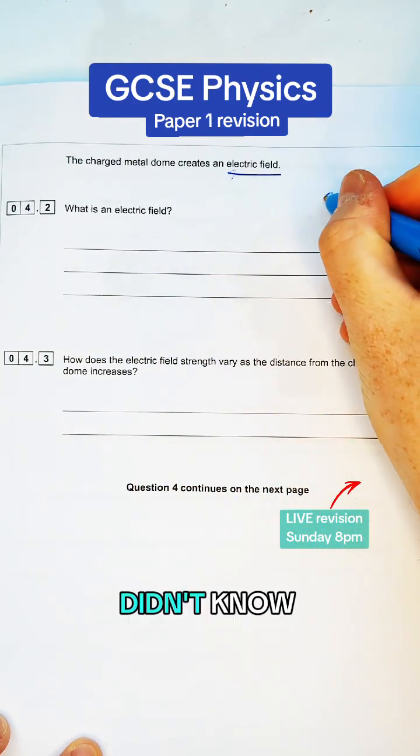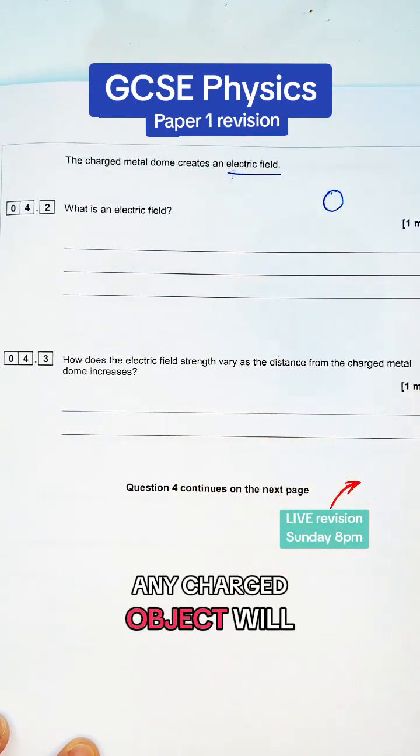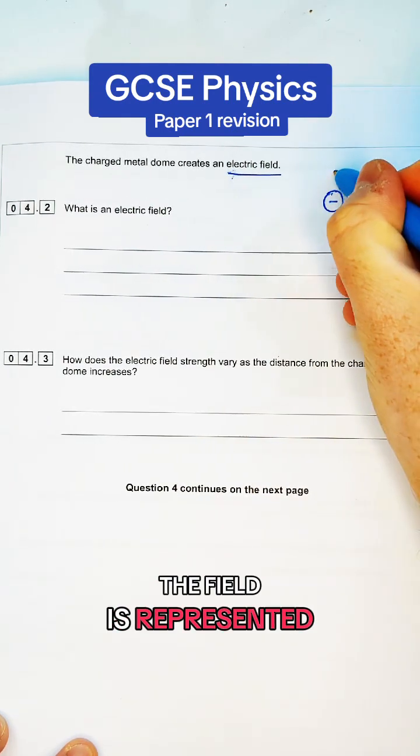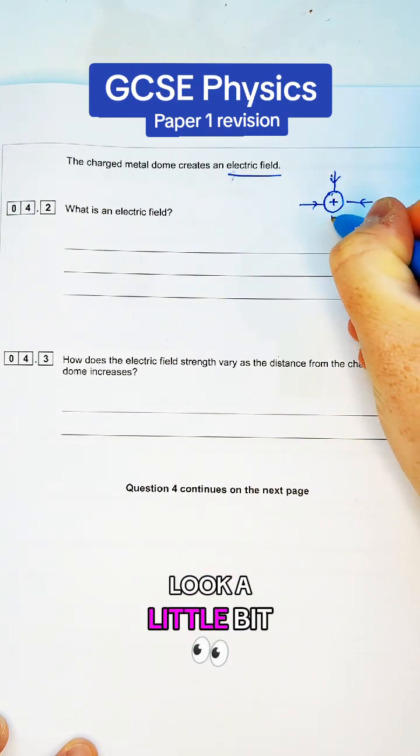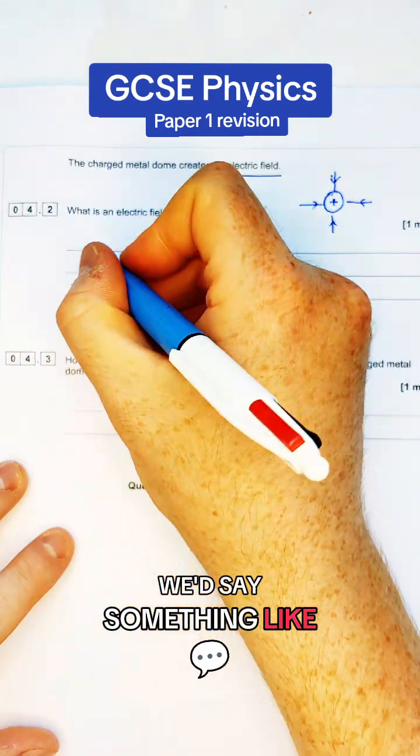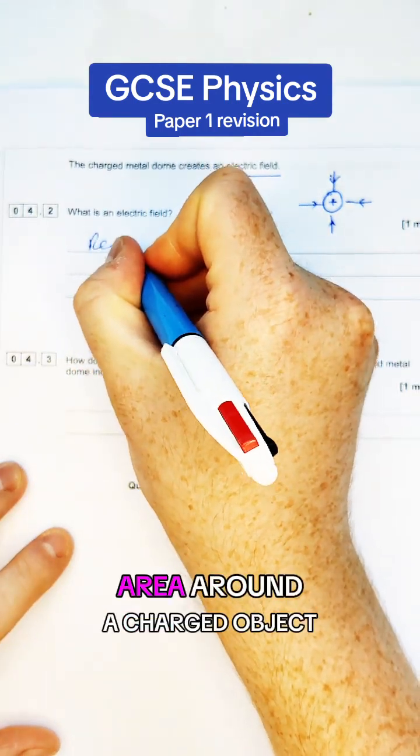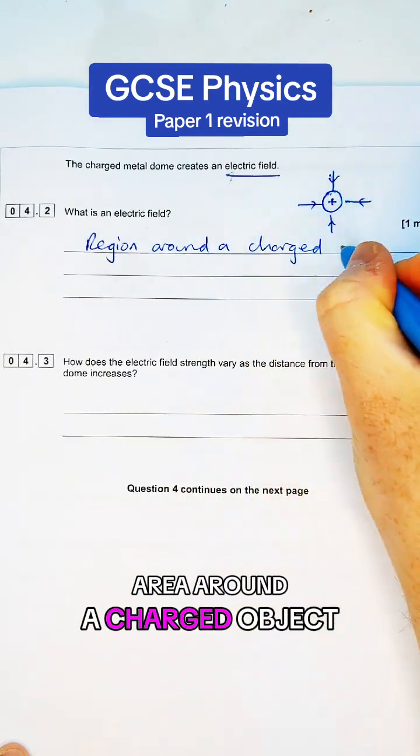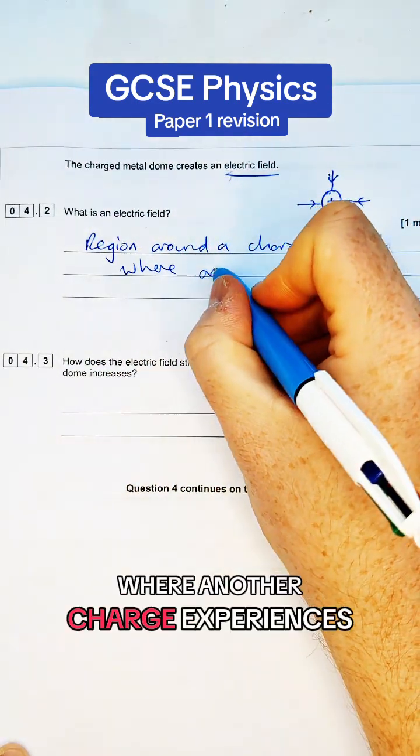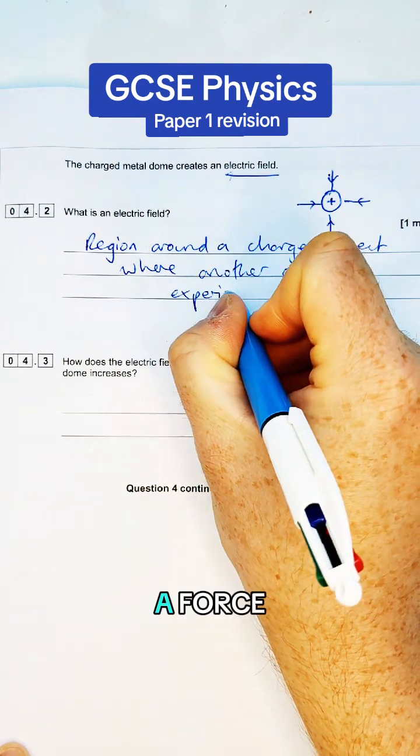Electric fields - if you didn't know, any charged object will have an electric field. It could be a positive or negatively charged object. The field is represented by field lines that look a little bit like this. To put this into words, we'd say the region or area around a charged object where another charge experiences a force.